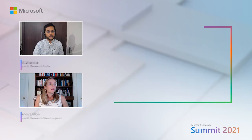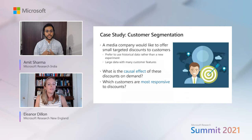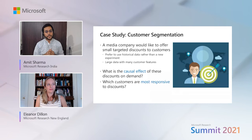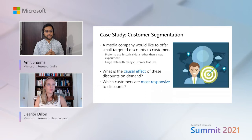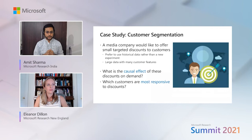We'll now switch into a case study to show how our libraries work and give you a hands-on experience. Our problem is customer segmentation. Imagine a media company — a very common problem — that wants to offer discounts but wants to target them to customers. Here it's very difficult to do experiments and A/B tests, so they prefer to use their large historical data. Two questions they want to ask: first, what is the causal effect of these discounts on demand? And second, which customers are more responsive to discounts? With the second, they can create policies and decide how to allocate their discounts.